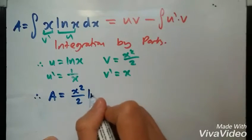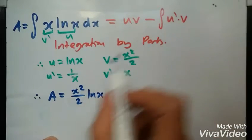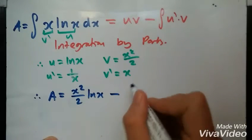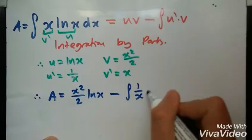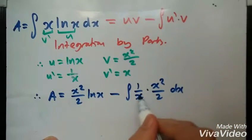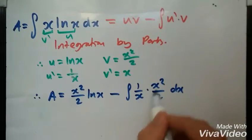Minus u prime, this value times v which is that, so it would be integral of 1 over x times x squared over 2 dx. And if you realize, this cancels out, so really all of this inside would be x over 2.